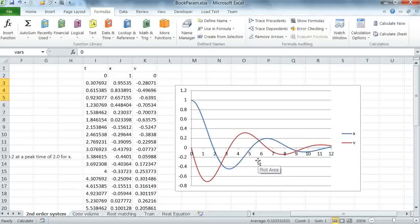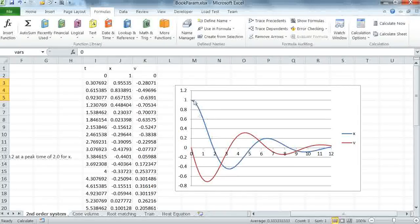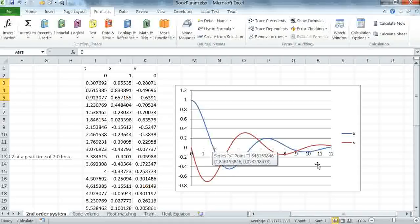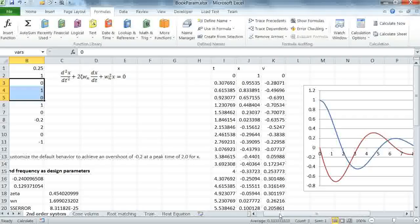There are multiple ways we can define these constraints. One obvious way is to restrict the minimum value of the displacement x to be minus 0.2 and also to demand that it occurs at t equal to 2. It's as simple as this. So how do we do this with criterion functions?